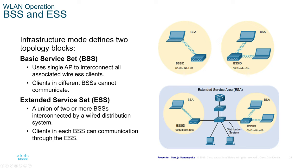The extended service set, also known as ESS, is a union of two or more BSSs interconnected by a wireless distribution system. Clients in each BSS can now communicate through the ESS. You can look at the ESS as similar to a wide area network — it interconnects these BSS systems together in one single network environment.